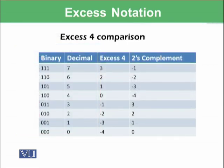Here, I have made a comparison of excess 4 notation for binary, decimal, excess 4 and in 2's complement. You can see that 1, 1, 1 is represented in decimal as 7. In excess notation, it is giving 3 and in 2's complement, it is giving minus 1.